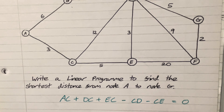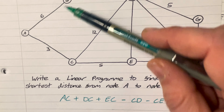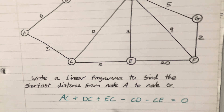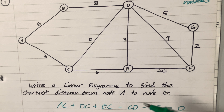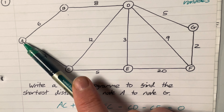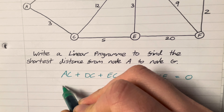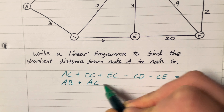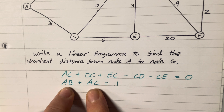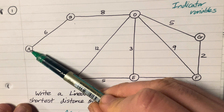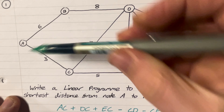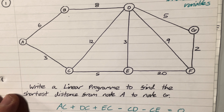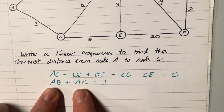I'll repeat that constraint process for all intermediary nodes: B, C, D, E, and F. I also need to handle the start node A: either AB or AC must equal 1, meaning AB plus AC equals 1. This forces exactly one of those arcs to be used — it can't be both and it can't be none. All variables are either 1 or 0 — nothing in between, nothing bigger than 1, nothing less than 0.